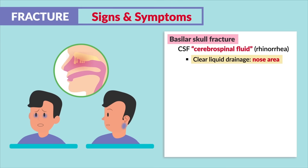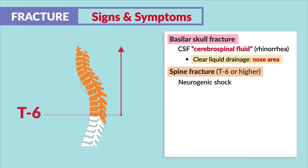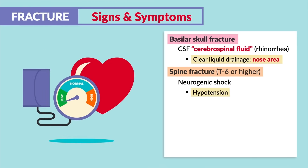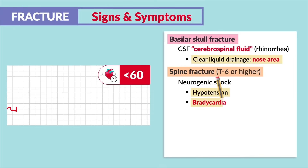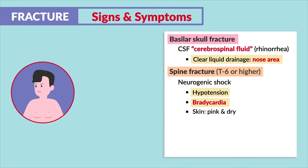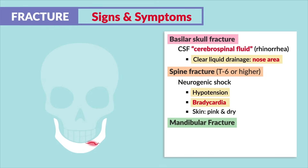For a spinal fracture that is T6 or higher, we want to monitor for neurogenic shock. Look for hypotension, as with any type of shock, as well as bradycardia — write that one down — because typically with shock we'll see tachycardia, but not for neurogenic shock. Bradycardia is the biggest indication, as well as skin that is pink and dry.